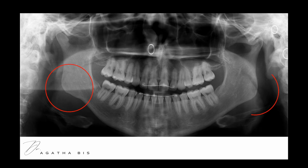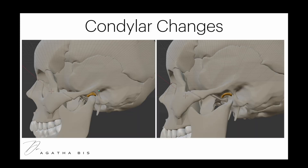Condylar changes in TMJ refer to alterations of the shape, size, or structure of the mandibular condyle, resulting from degenerative joint disease, trauma, or inflammatory conditions. Let's take a look at some common degenerative changes I see all the time in the TMJ patients that come into my practice.